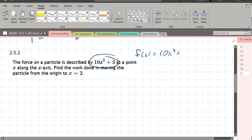10x cubed plus 3. Now it's going to move a point along the x-axis and we want to find the work done moving the particle from the origin, which of course is x equals zero, to x equals two.